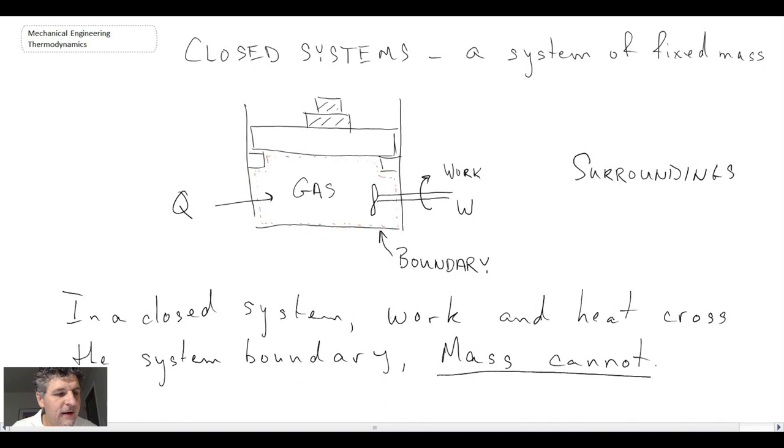The second type of system that we will look at is the open system. And this is a system whereby mass can cross the boundary of the system.